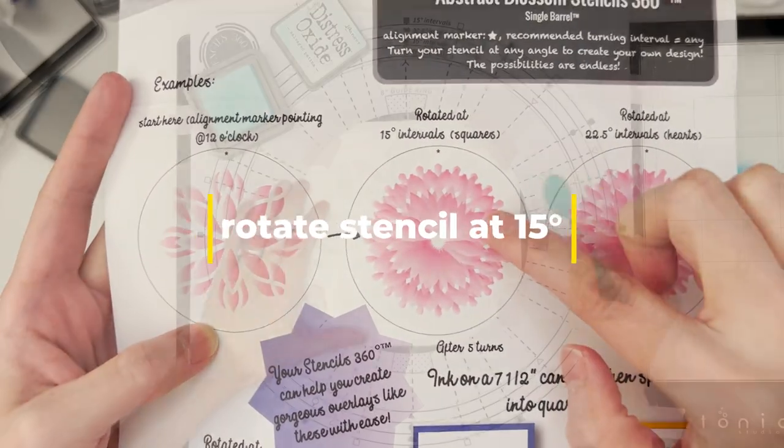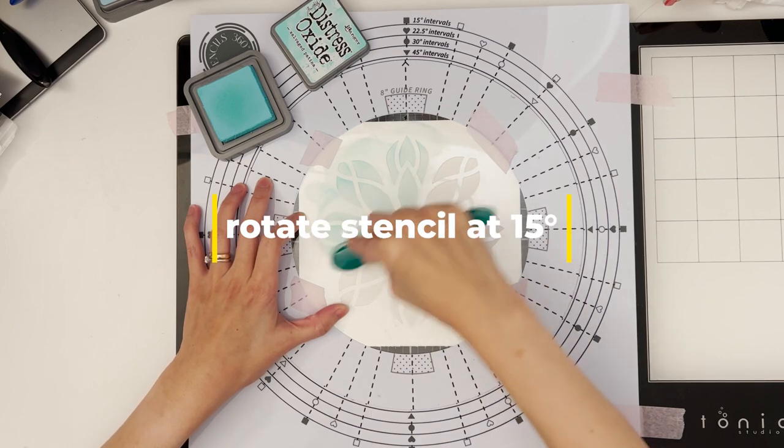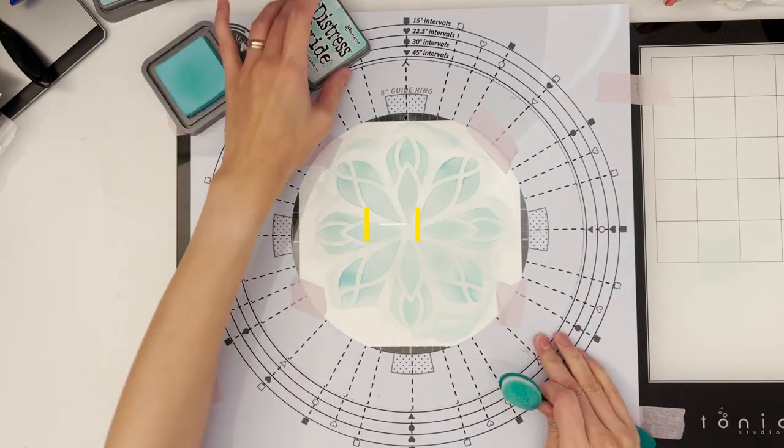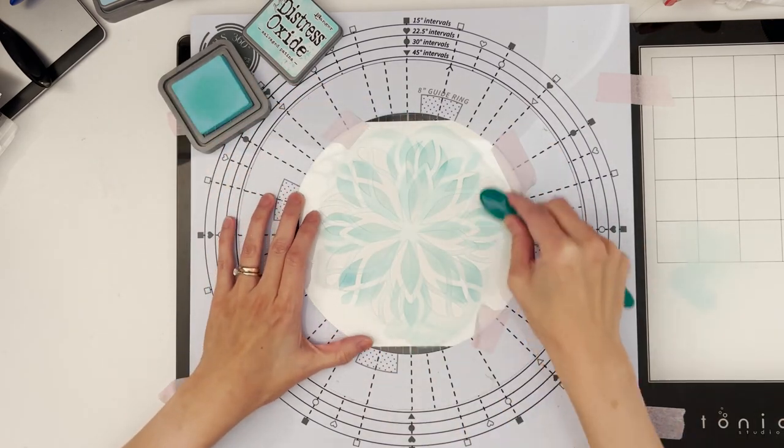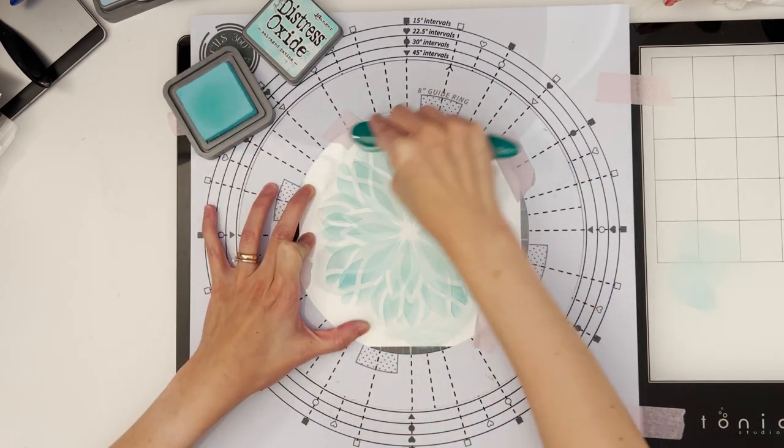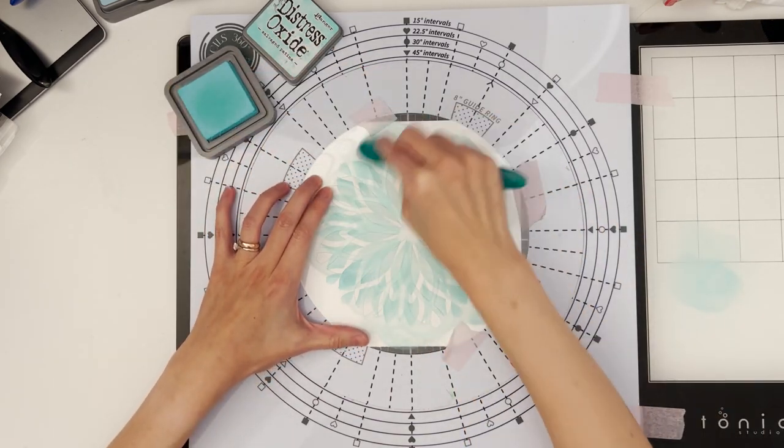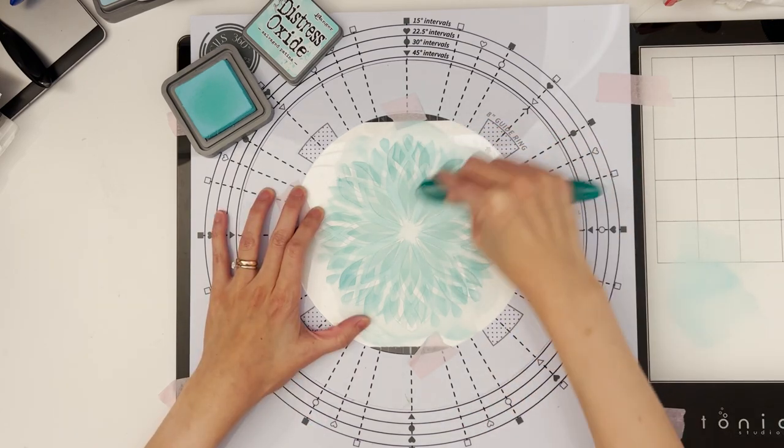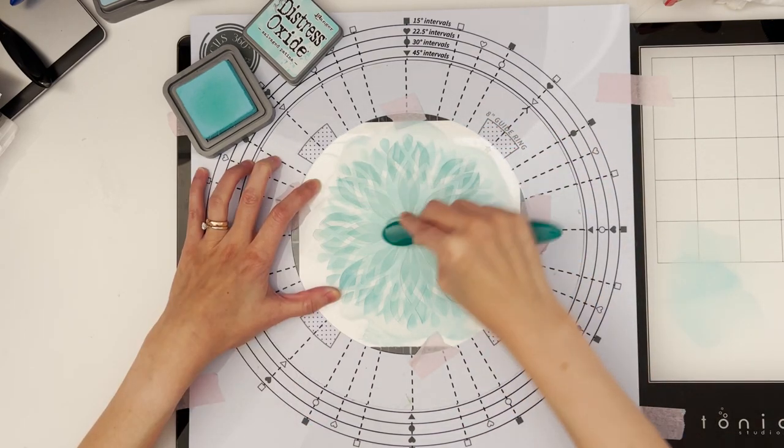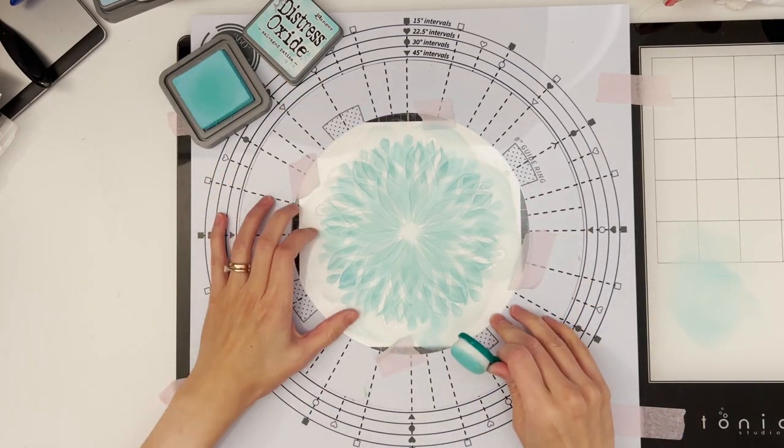Now I'm going to show you what you're going to get if you rotate it at an even smaller turning interval, which is 15 degrees, i.e. jumping from square to square. This time, I'm using salvaged patina distressed oxide all the way. Also, I'm going to do things a little different. This time, I'm going to tape my stencil to the guide ring and spin them both together as one. To complete this design, I rotated my stencil for five turns.